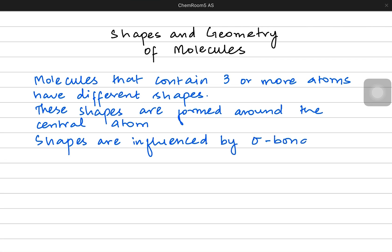These shapes are influenced by the sigma bond pairs. Because sigma bond pairs are the main ones which are directional and electron pairs are negatively charged, so they repel each other. Lone pairs also affect them.